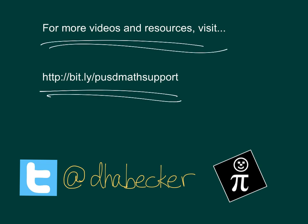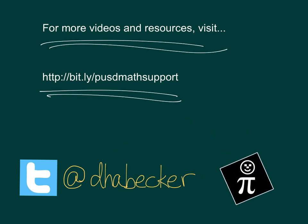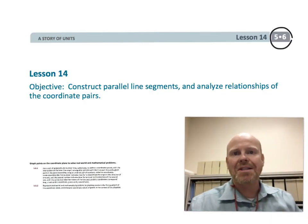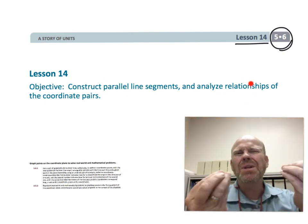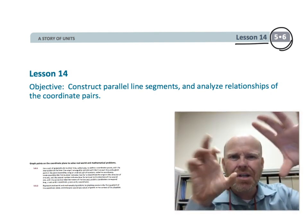This is fifth grade Module 6 Lesson 14. In this lesson, students are going to be constructing parallel line segments. They're going to look at some parallel lines, look at the points that created those line segments, and then look for patterns in those coordinate pairs. The idea is: if you take a couple of points, create a line, slide them over, and look at the new line — not only are the lines parallel, but there's a cool pattern between the coordinate pairs.